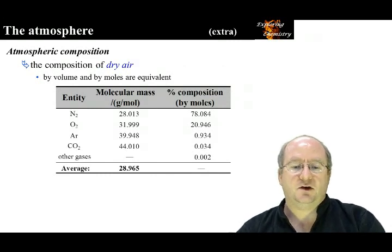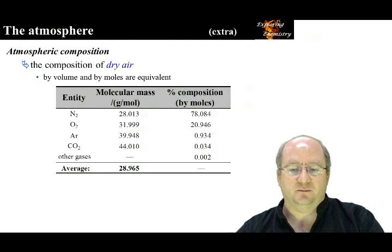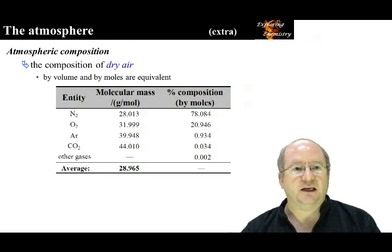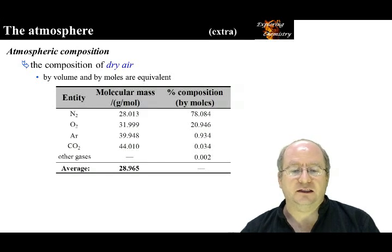This is the composition of dry air. In addition, air contains moisture, but the amount of moisture is variable and depends on the location, temperature, and humidity. Dry air contains 78.1% nitrogen, 20.9% oxygen, 0.9% argon, and less than 0.1% other gases.